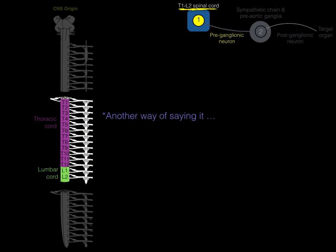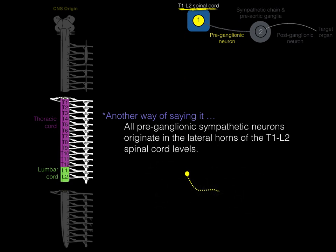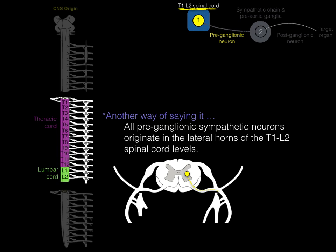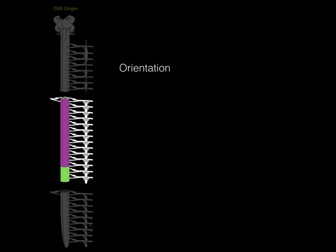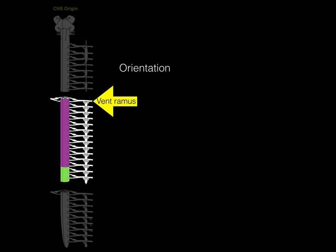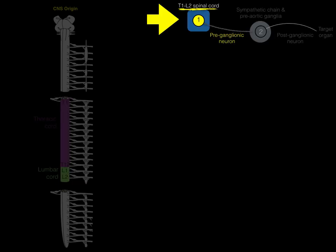For orientation on this illustration: there's the dorsal root, the ventral root, and the ventral ramus. You might wonder where the dorsal ramus is — it would be there if drawn in, but it was removed to simplify the picture. The T1 to L2 spinal cord level is where all preganglionic sympathetic neurons arise.